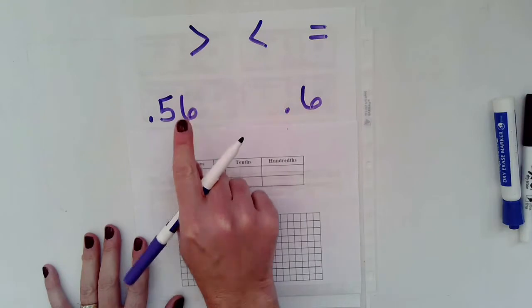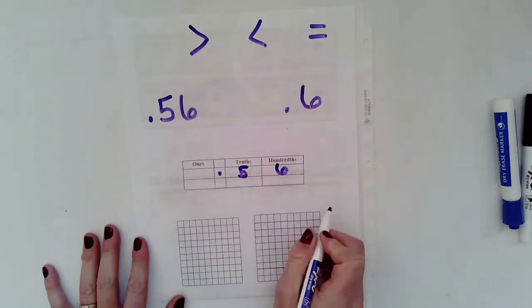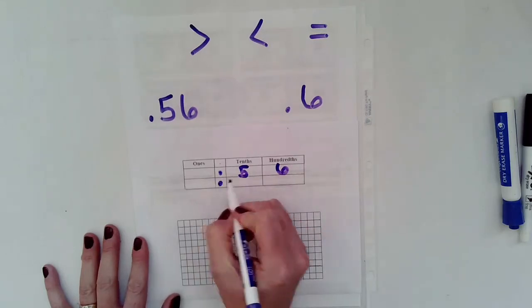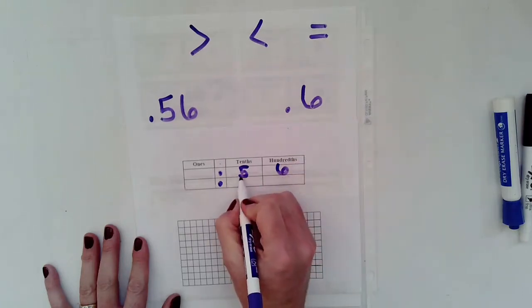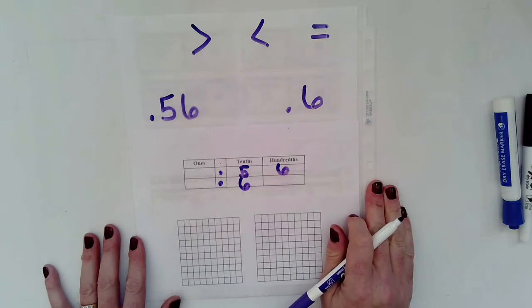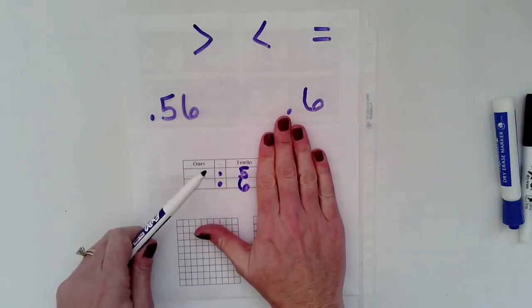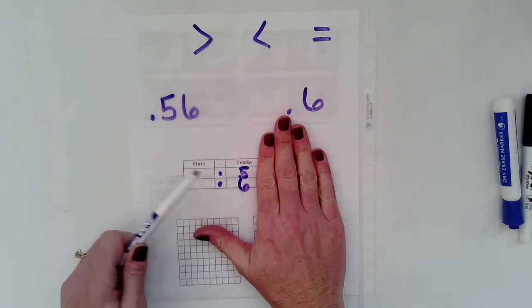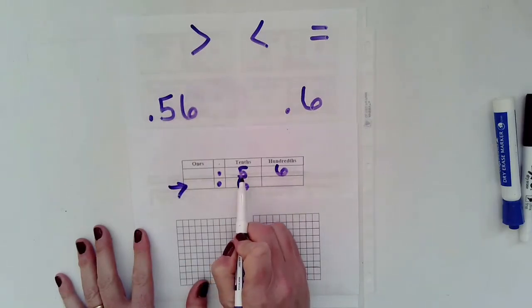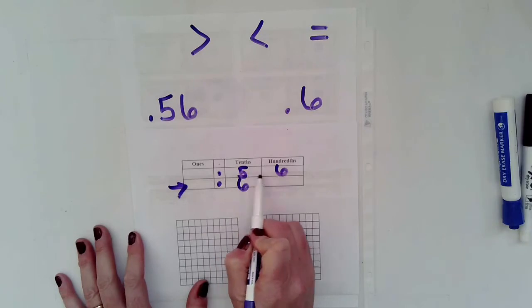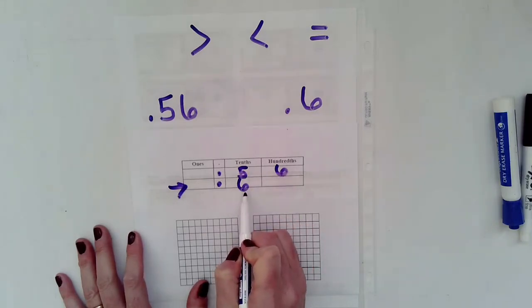So if I have 56 hundredths, I know I'm going to have a 5 in the tenths place and a 6 in the hundredths place. And then this number right here is 6 tenths. And I know that because the 6 ends in the tenths place. So again, I'm going to look at the largest place value, and in this case, it is the tenths. And I have 5 tenths and 6 tenths. Well, I know that 6 tenths is greater than 5. Even though the 5 and the 56 hundredths has more digits, the 6 tenths is larger.